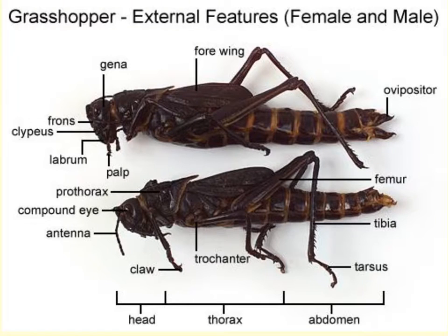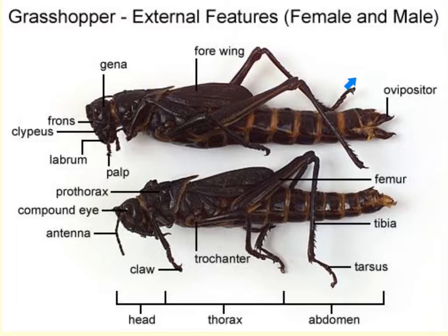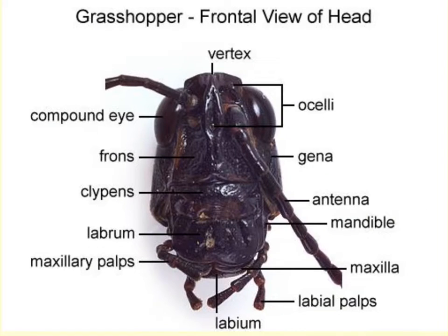With regard to the external anatomy of the grasshopper, the grasshopper's body is divided into three main body regions: the head, the thorax, and the abdomen. The head area consists of six fused segments and bears sensory and feeding structures.